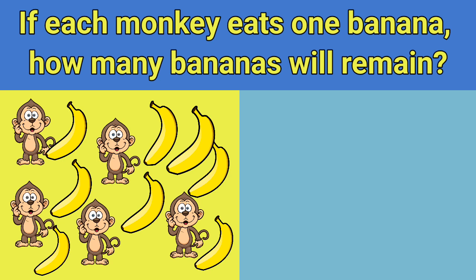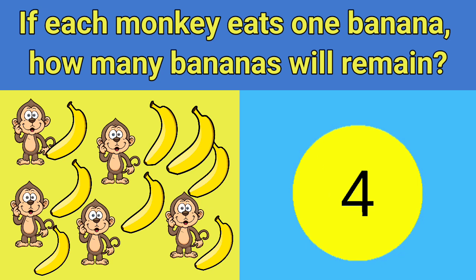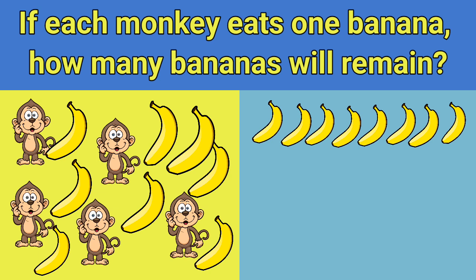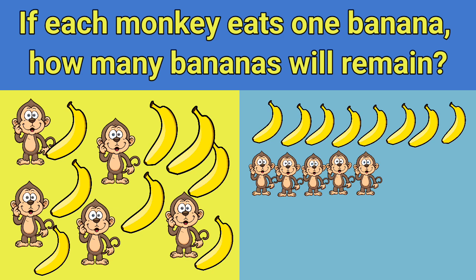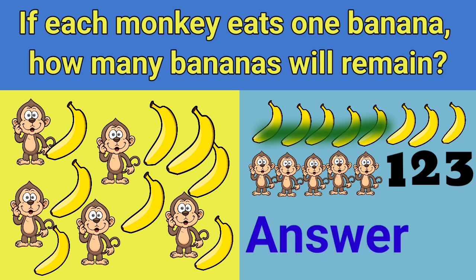If each monkey eats one banana, how many bananas will remain? Let's count. There are eight bananas and there are five monkeys. Five monkeys will eat five bananas. How many bananas are there left? One, two, three. Three bananas.